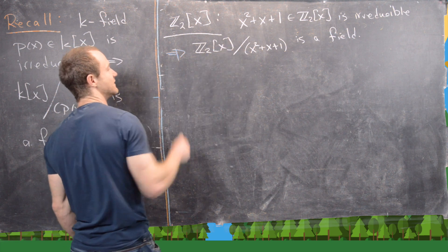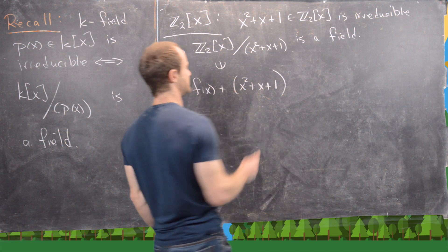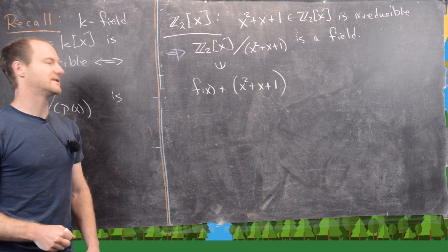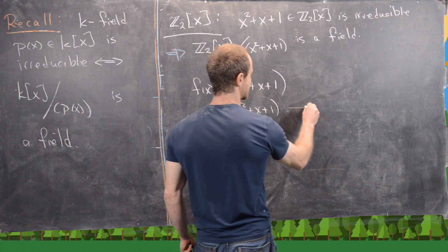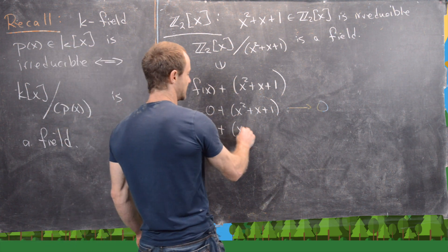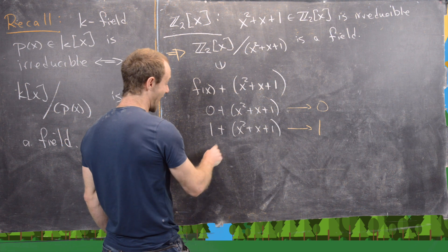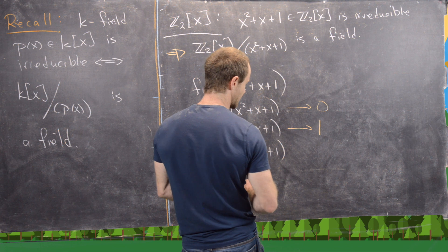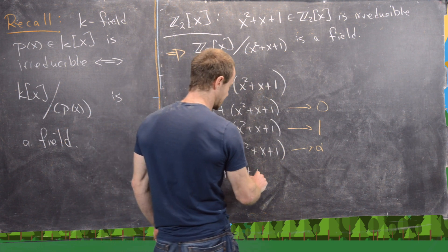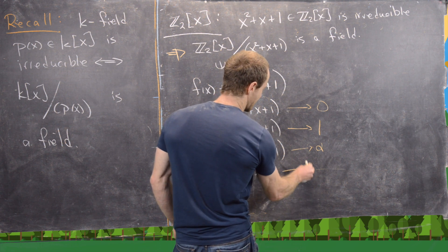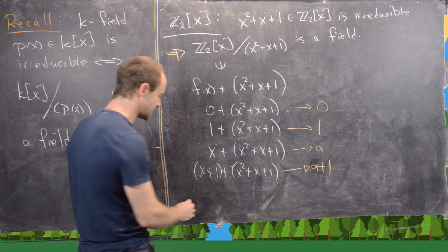Elements inside this quotient ring look like cosets: f(x) + (x²+x+1). We can list them: 0 + (x²+x+1), which we rename 0; then 1 + (x²+x+1), renamed 1; then x + (x²+x+1), renamed alpha (α); and finally (x+1) + (x²+x+1), renamed α+1.